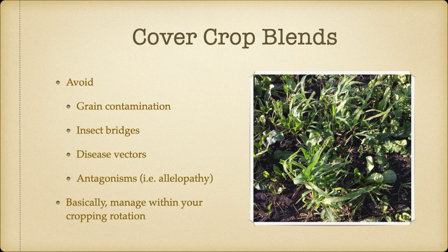What we want to do when designing these blends is avoid grain contamination. For example, if you're growing gluten-free oats and you decide to use fall rye as a fall cover crop, there's a really good chance that fall rye is going to overwinter and potentially contaminate your oats. Also, if you're going to seed radishes the year before seeding canola, the radishes, if they don't germinate, will germinate the next year, flower, go to seed, and then you'll have radish seed in your canola — not a good thing.